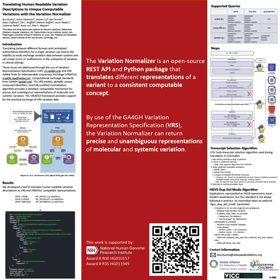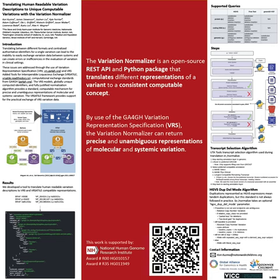We also have an internal algorithm for representing HGVS duplications and deletions. Duplications represented as HGVS expressions mean tandem duplications, but this standard is not always followed in practice, so the normalized endpoint takes an optional HGVS dup/del mode parameter. In the default mode: if baseline copies are not set and endpoints are ambiguous, it's a relative copy number variation. If the relative copy class is not provided, then the relative copy class is partial loss for deletions or low-level gain for duplications. If baseline copies are provided, then it's an absolute copy number variation, and the copies attribute is baseline copies plus one for duplications and baseline copies minus one for deletions.